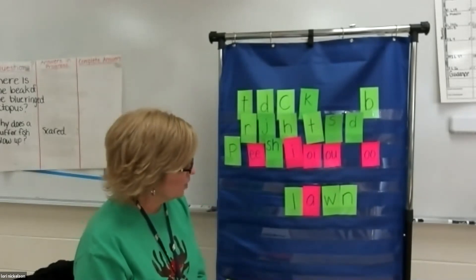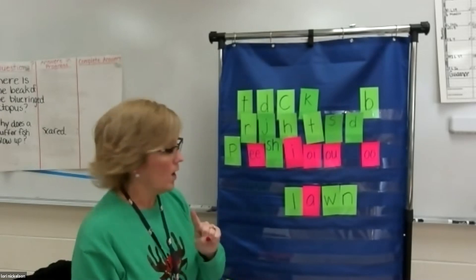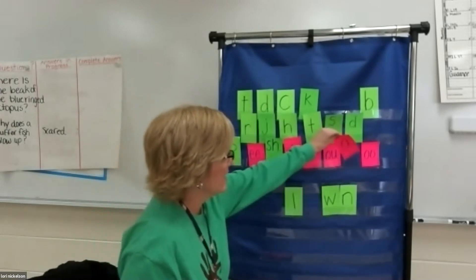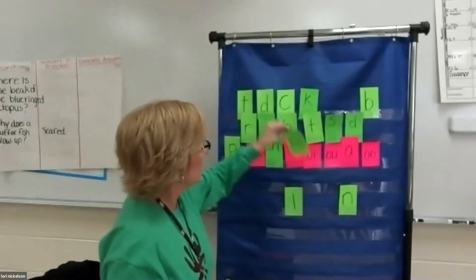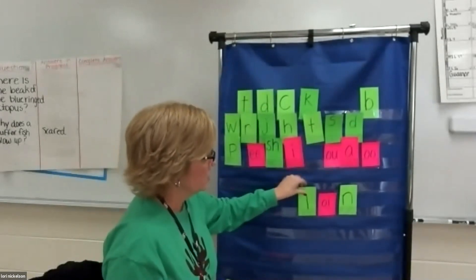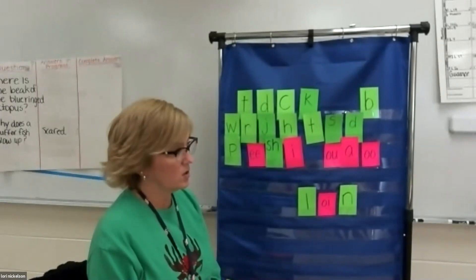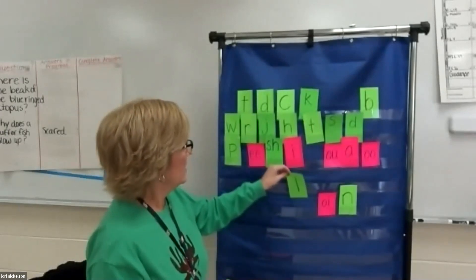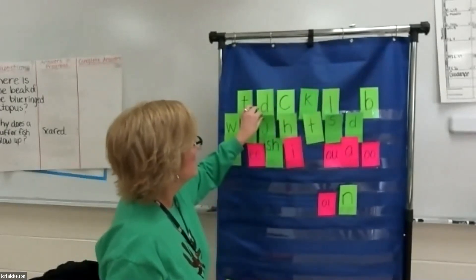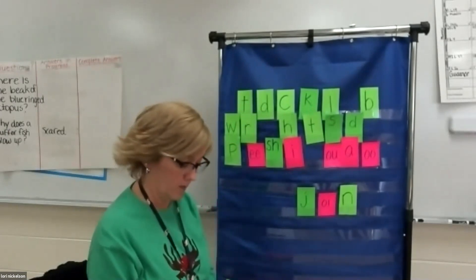So let's make the word loin. How would I make the oi sound in the middle? O-I. So we're going to replace the A and the W with an O-I. And now I have loin. What if I wanted to make loin into join? Take the L away and put a what? A J. And now I have join. Great job.